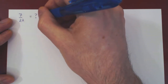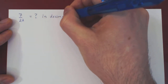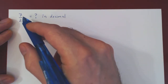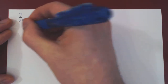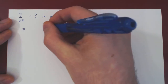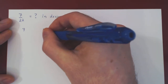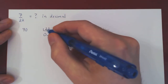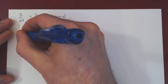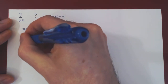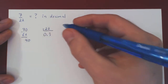We're asking what this is in decimal expansion. This can be easily obtained using long division. So we are dividing 7 by 22. How many times can we fit 22 into 7? The answer is none. Multiply by 10 — we can fit 22 three times into 70.